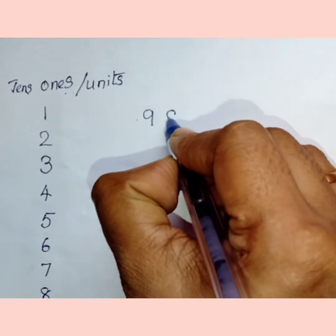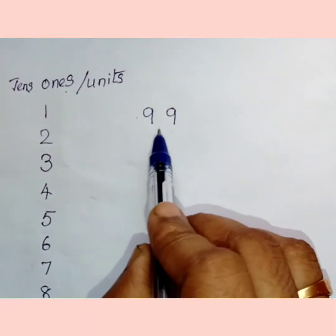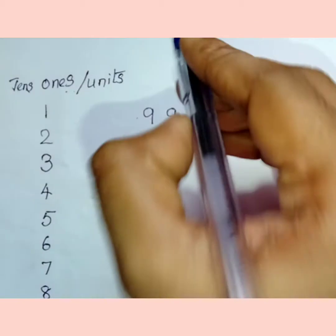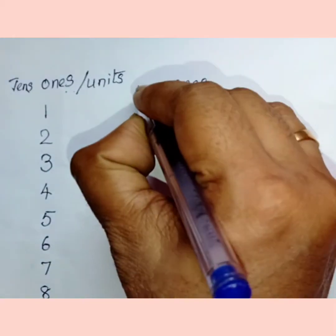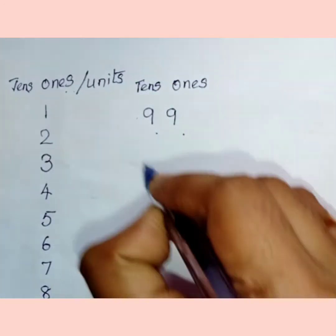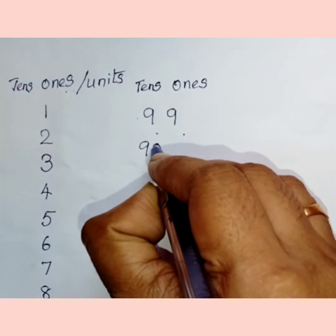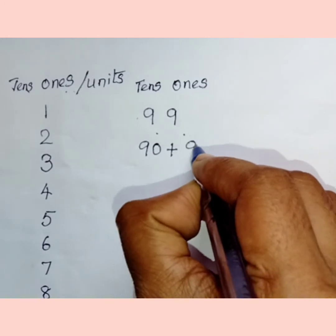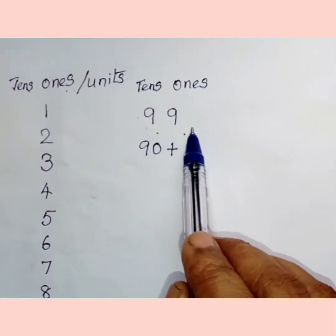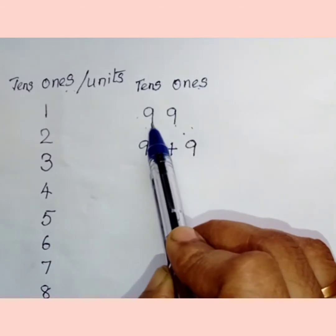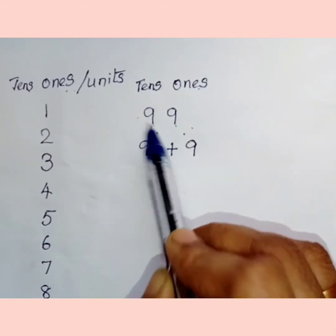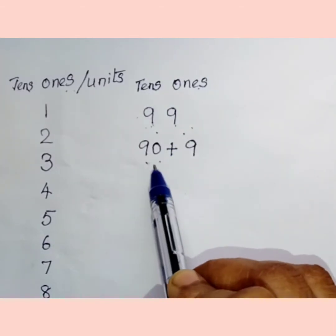So, 99. The first 9 stands in the ones place and the next 9 stands in the tens place. That is 90. 9 tens is 90 plus 9 ones. 9 tens and 9 ones.